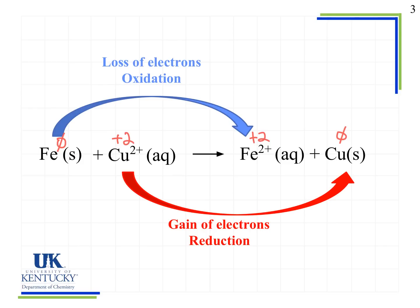Looking at this reaction, I'll start with iron since it's written first. It has an oxidation number of zero on the reactant side. Going to the iron on the product side, I see it has an oxidation number of plus two. I've increased my oxidation number, which means I've lost electrons. Therefore, this is undergoing oxidation.